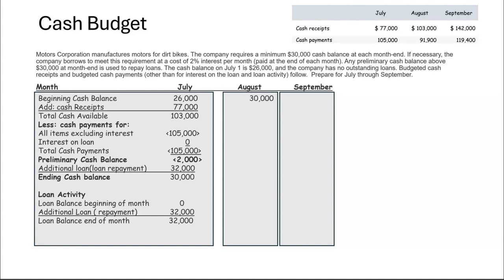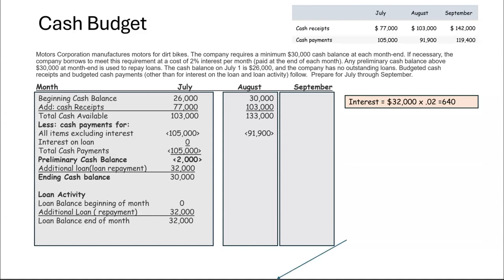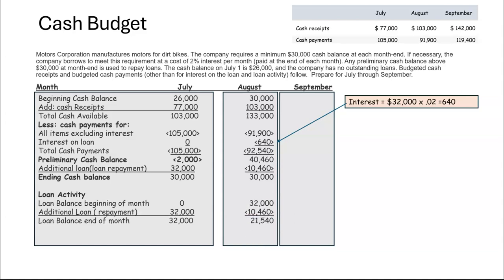In August, we start with the $30,000 ending cash balance calculated in July — our minimum balance. From the chart above, we had $103,000 in cash receipts and payments of $91,009. We have interest on the $32,000 loan of $640. That gives us total cash payments of $92,540 and a preliminary cash balance of $40,460, which is greater than $30,000. That means we can start paying back our loan. If we apply $10,460, we'll have our $30,000 in the bank and reduce our loan balance down to $21,540.